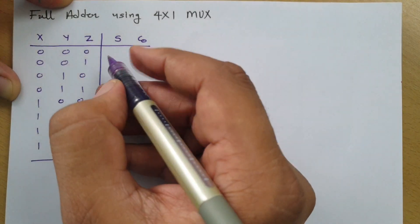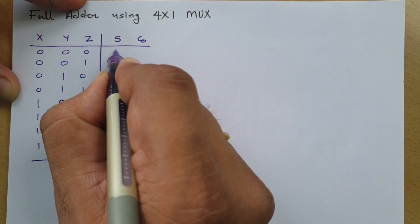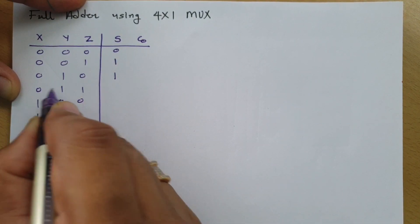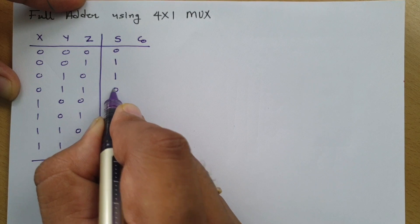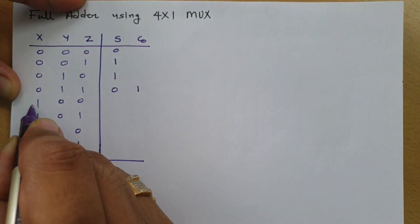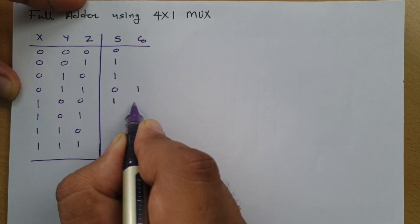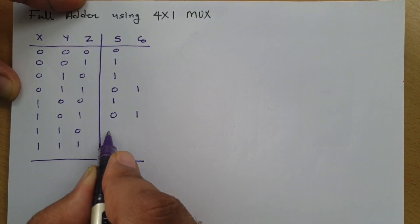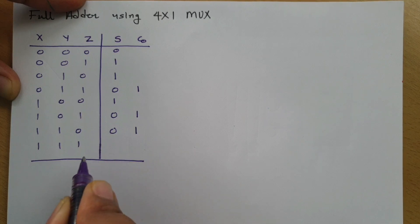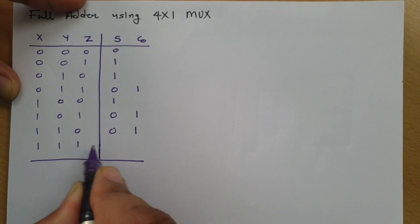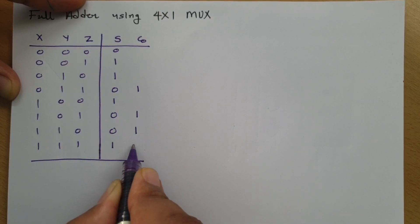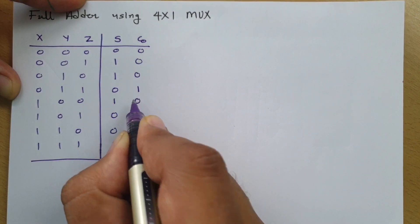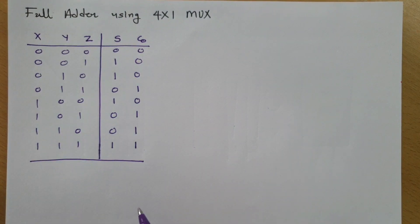As per these eight combinations, sum values are: 0, 1, 1, then 1+1 gives 0 with carry 1, then 1, then 1+1 again gives 0 with carry 1, then 1+1 again gives 0 with carry 1, and finally 1+1+1 equals 3, meaning sum is 1 and carry is 1. So this is how sum and carry are defined.